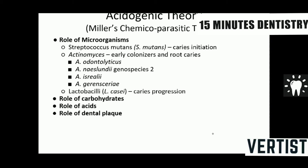The two chief microorganisms playing a role in dental caries are Streptococcus mutans and Lactobacilli. Though all five types of streptococcus are important, Streptococcus mutans is required for caries initiation, while Lactobacilli are responsible for caries progression. Actinomyces are important early colonizers in root caries.